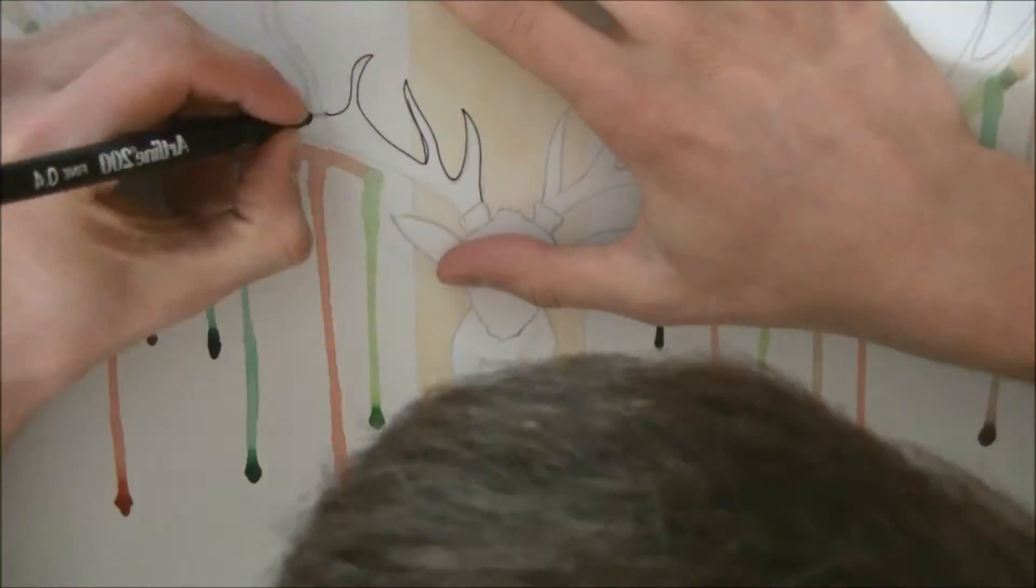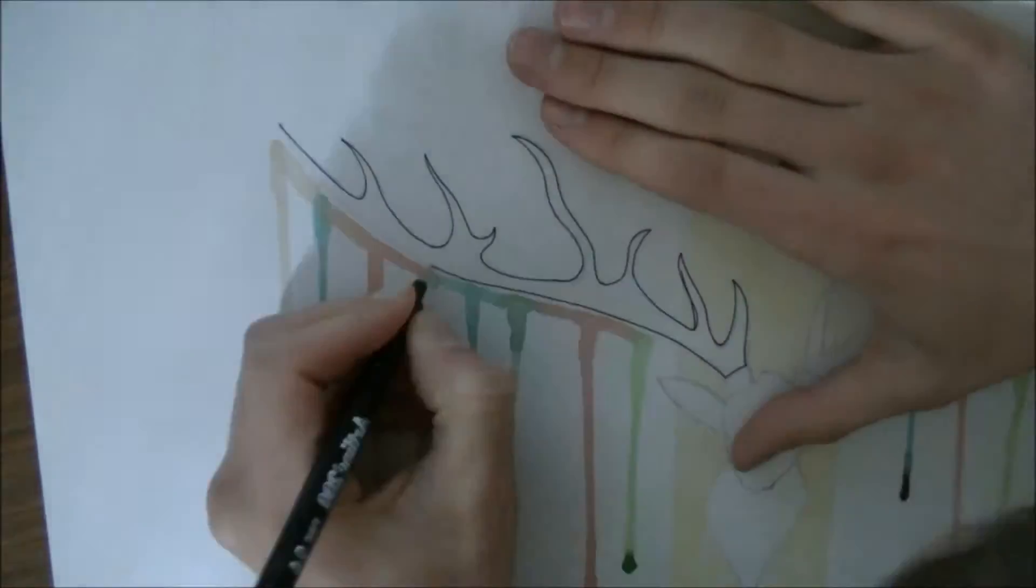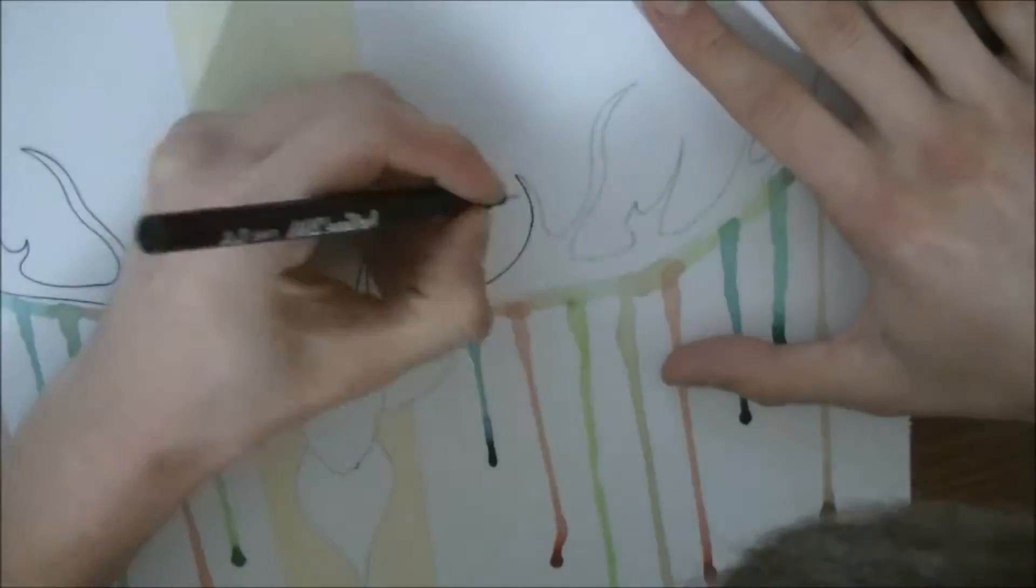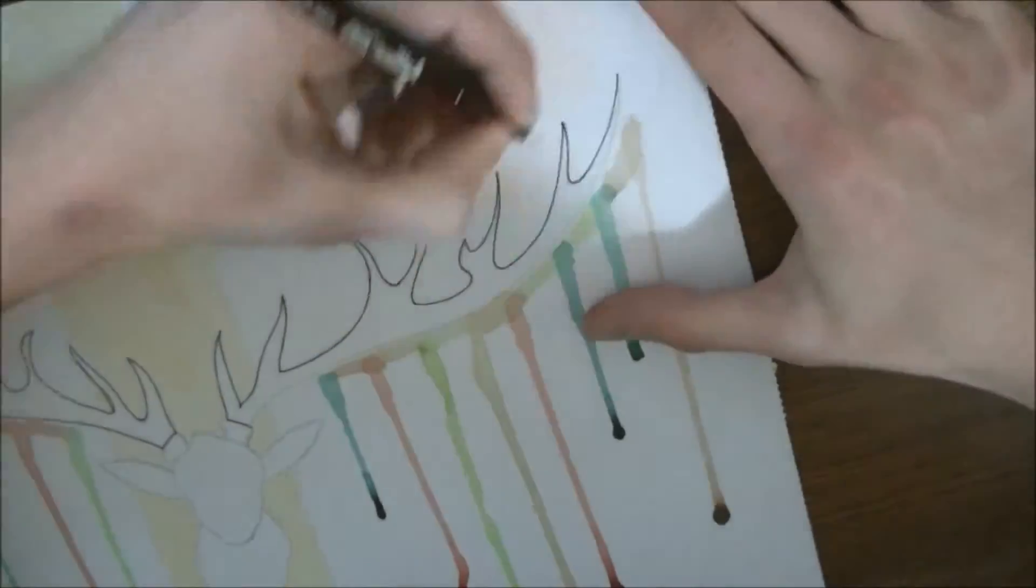The smallest deer species weighs about 9 kilos or 20 pounds and is just 36 centimetres tall. That's tiny!